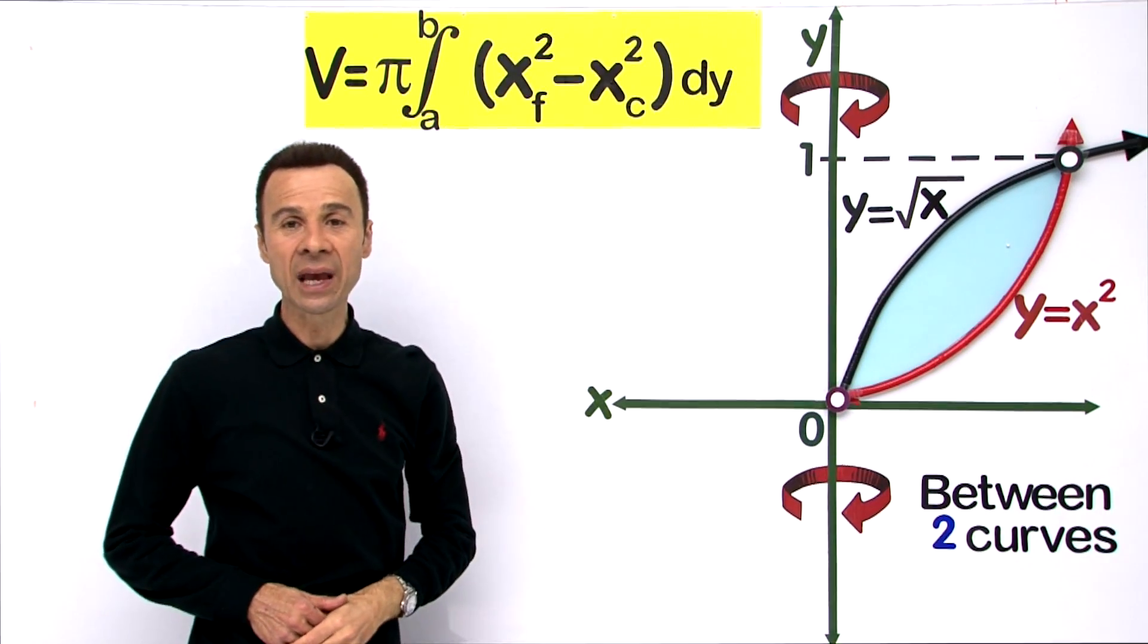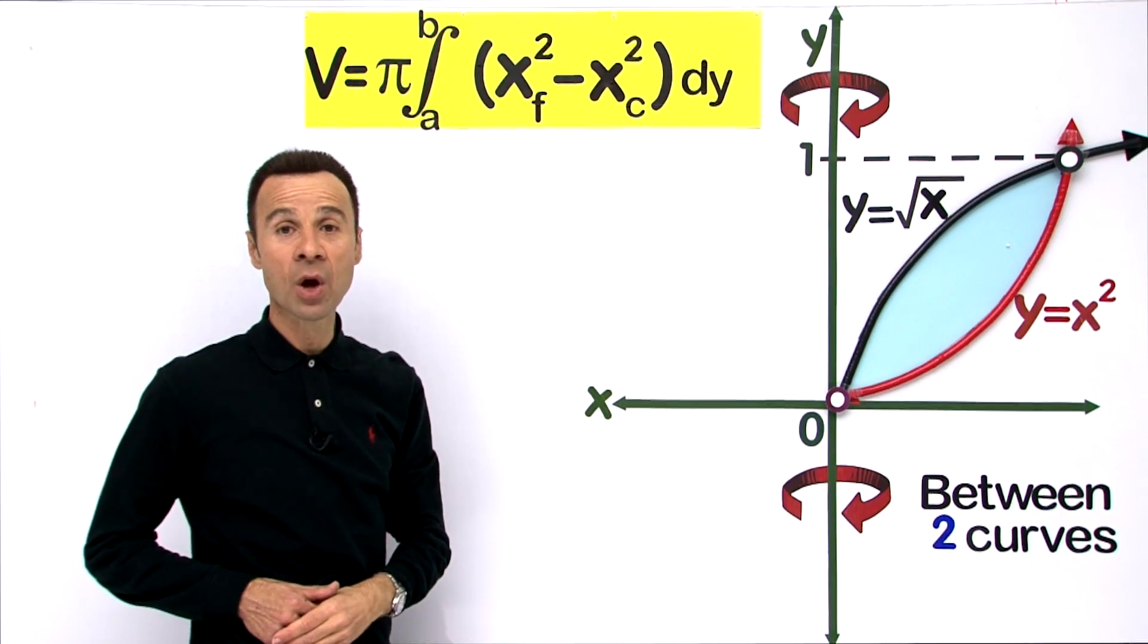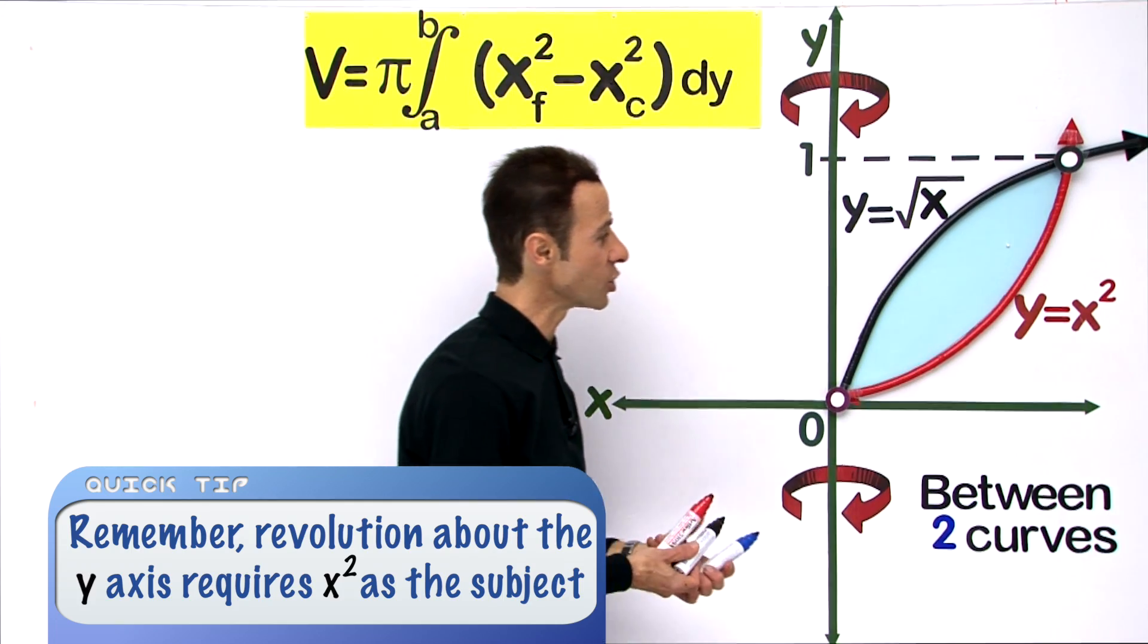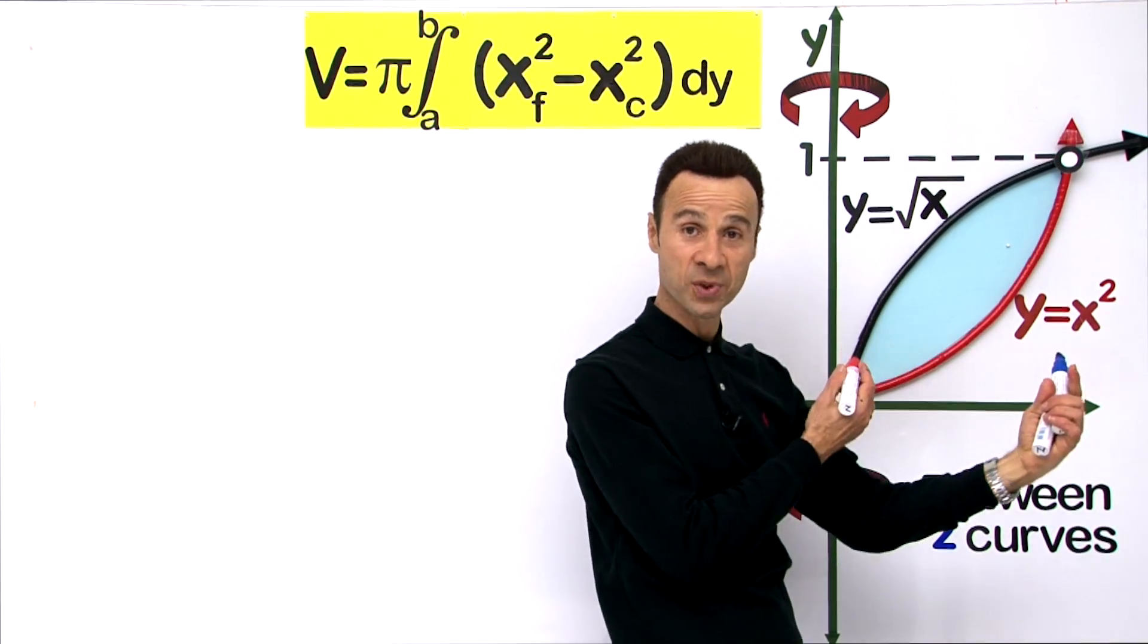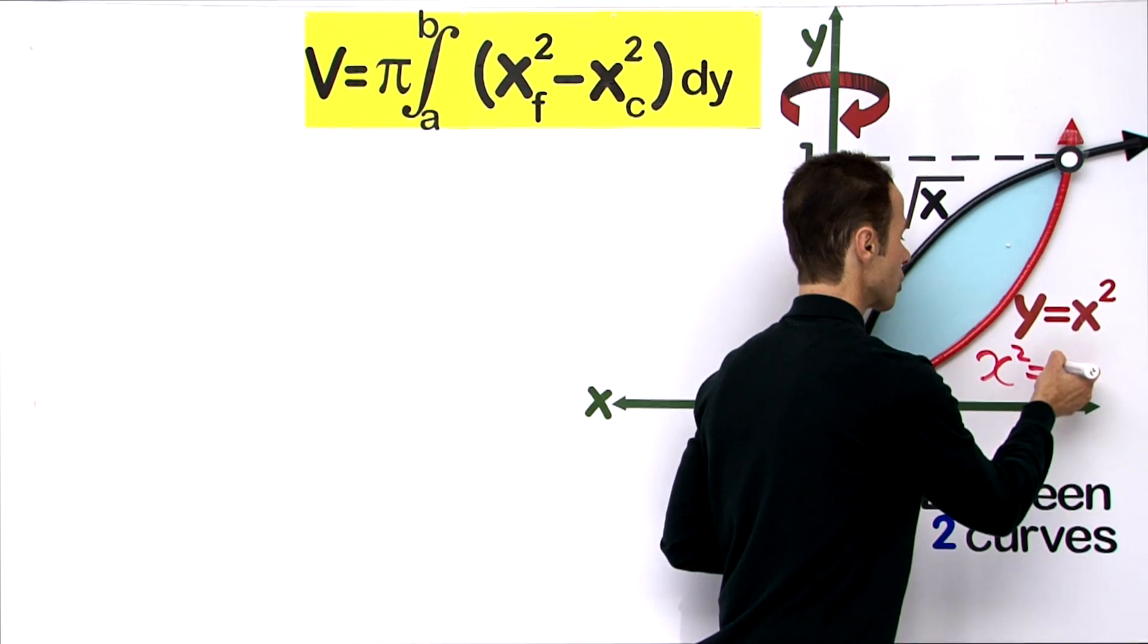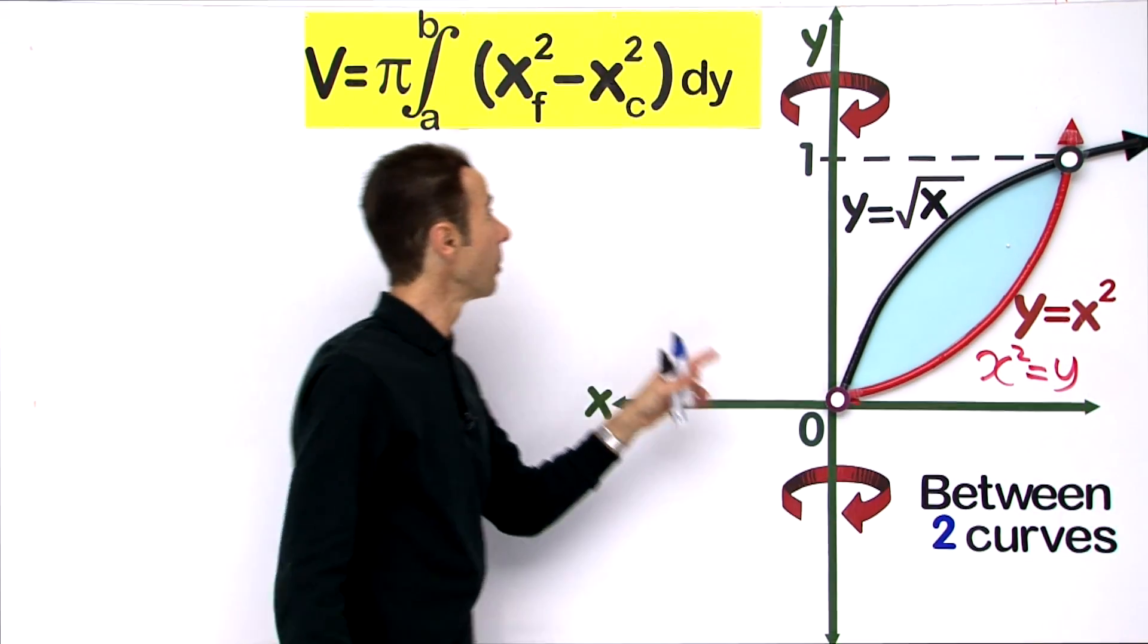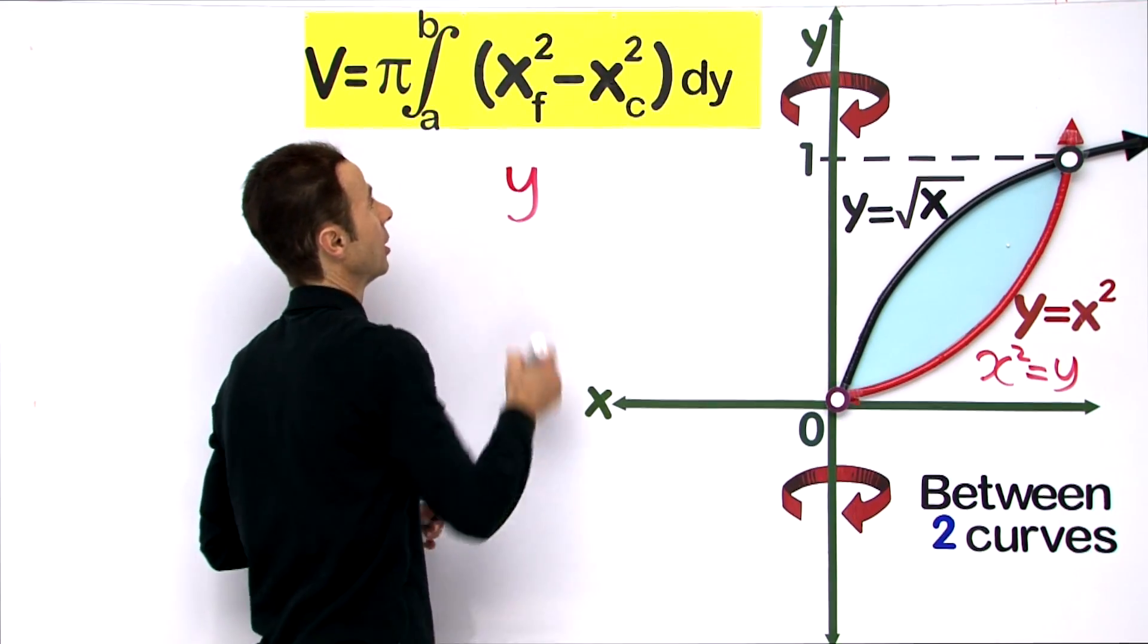Let us make x squared the subject because that is what we need. For the parabola, swapping sides gives us x squared equals y. That was pretty easy, so let us put it here - x squared equals y.